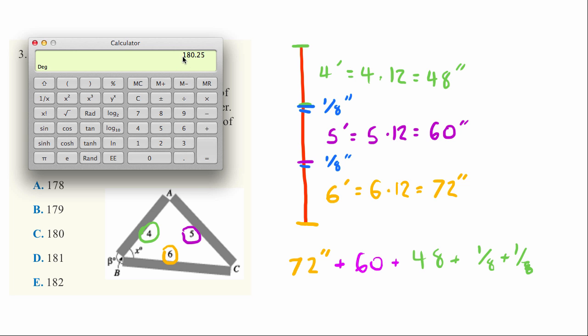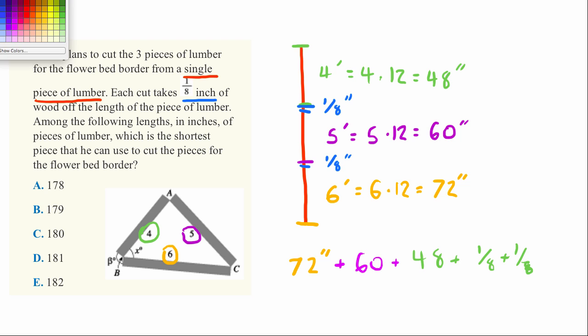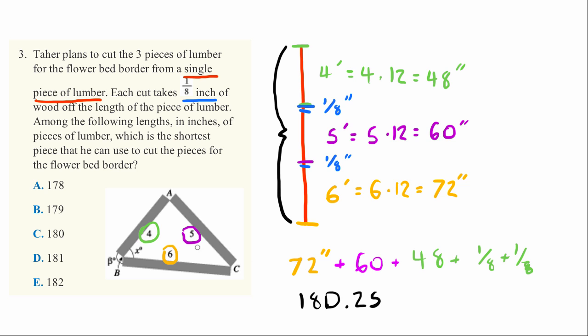That's the minimum size that he would need, 180.25. That's the smallest that this length could be for him to even build the garden as it's drawn here. So we're going to need a number larger than that, and the smallest number that's larger than that here is D. We're going to need at least 181 inches of wood in order to build Tahir's garden.